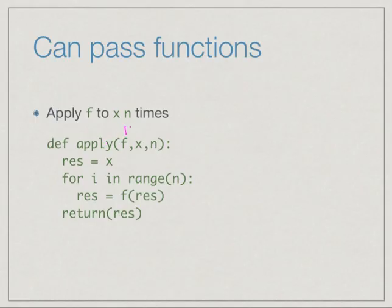The first is a function. The second is the argument, and the third is the number of times, the repetitions. You start with the value that you have provided, and as many times as you are asked to, you keep iterating the function f.